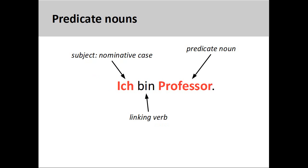Predicate nouns are also in the nominative case. Like predicate adjectives, predicate nouns are simply nouns that appear after a linking verb in a sentence and provide more information about the subject. In the sentence 'ich bin Professor' — I am a Professor — the first-person singular personal pronoun 'ich' is the subject of the sentence and therefore in the nominative case. The masculine noun 'Professor' is also in the nominative case as it appears after the linking verb 'bin'.